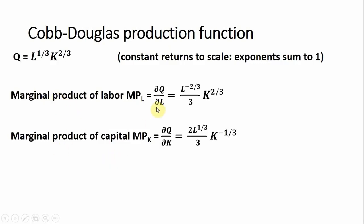The marginal product of labor is found by taking the partial derivative of output with respect to L. We bring down the one-third in front — that's the same as dividing by three — and then L to the one-third minus one gives us L to the minus two-thirds. We treat the K term as a constant. For the marginal product of capital, we bring down the two-thirds in front, and K to the two-thirds minus one leaves us with K to the minus one-third. The L term is treated as a constant.